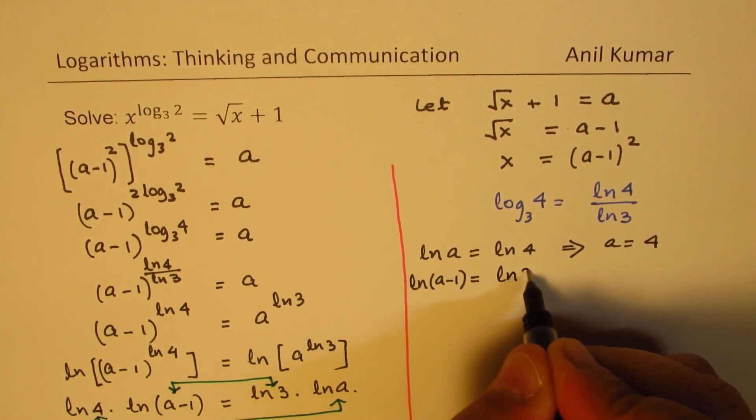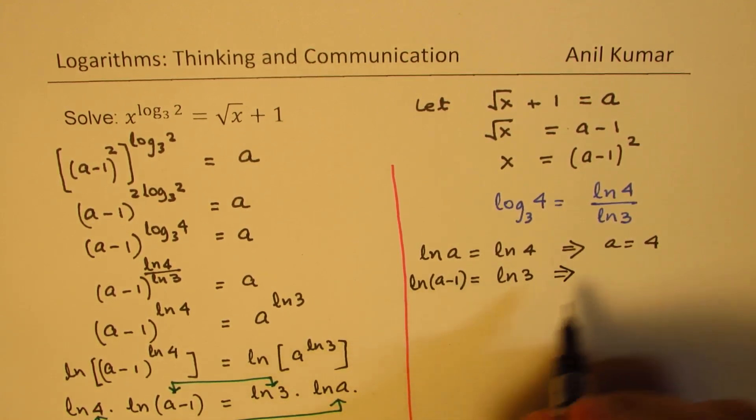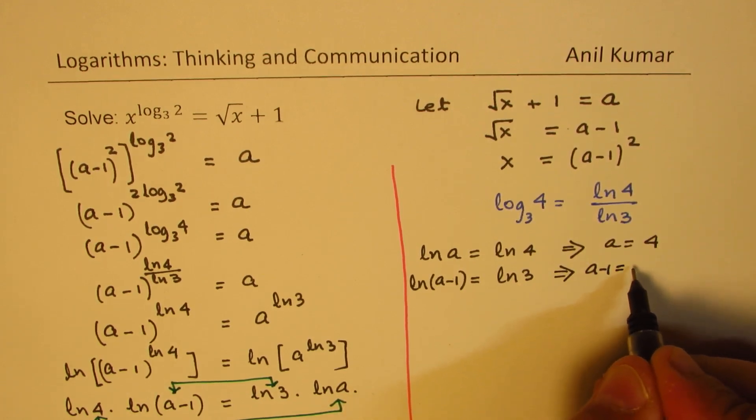We have ln a minus 1 equals ln 3, and that also gives you the same result which is a equals 3 plus 1 equals 4. So basically we get the value of a.